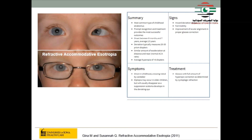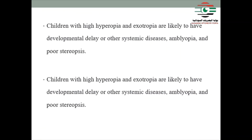Children with high hyperopia and exotropia are likely to have developmental delay or other systemic disease, amblyopia, and poor stereopsis. These children present with multiple complex problems and require careful management addressing the systemic disease, amblyopia, and poor stereopsis.